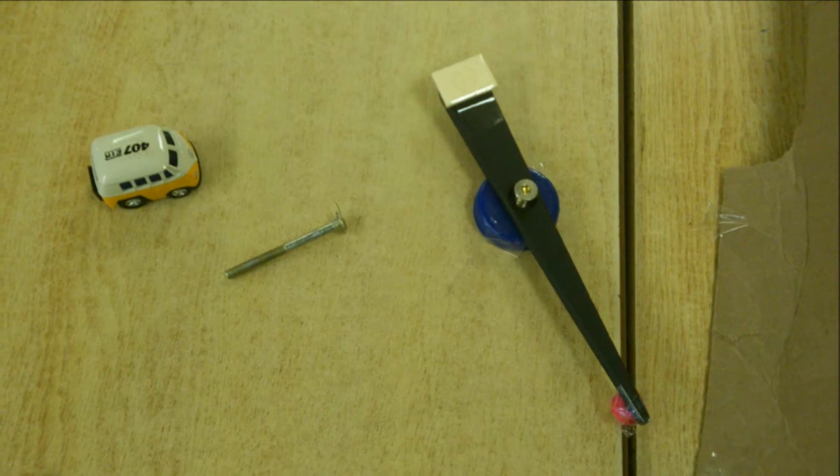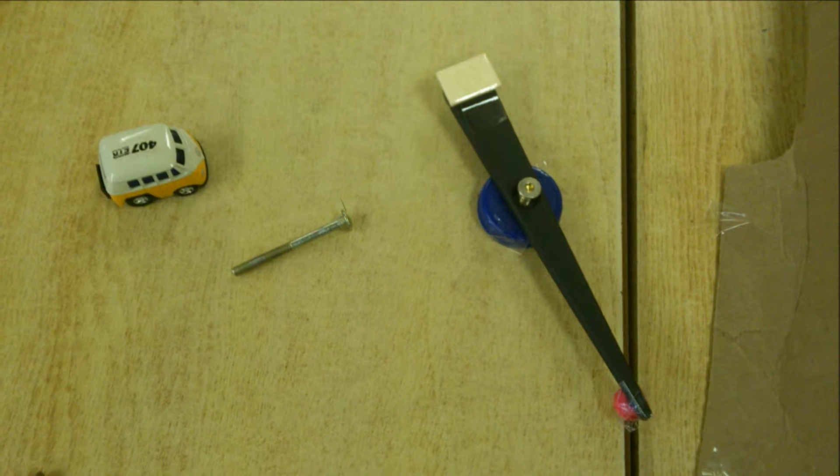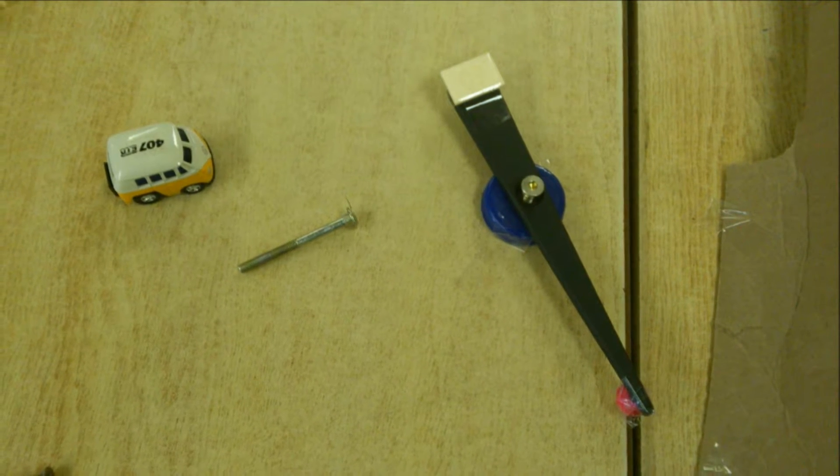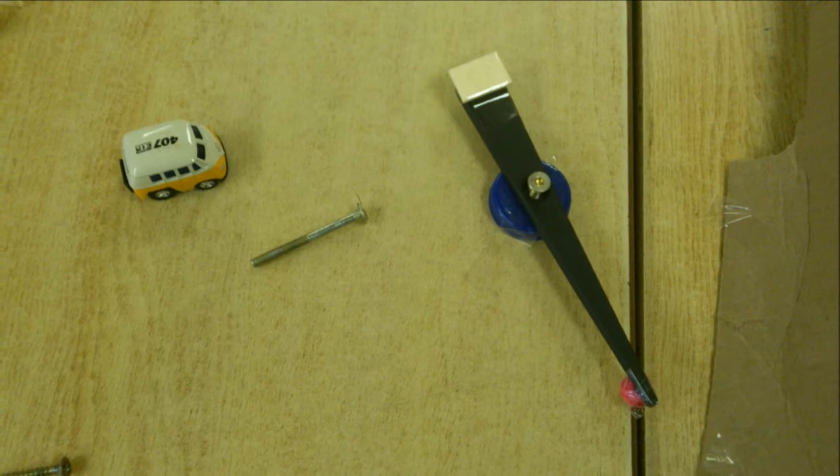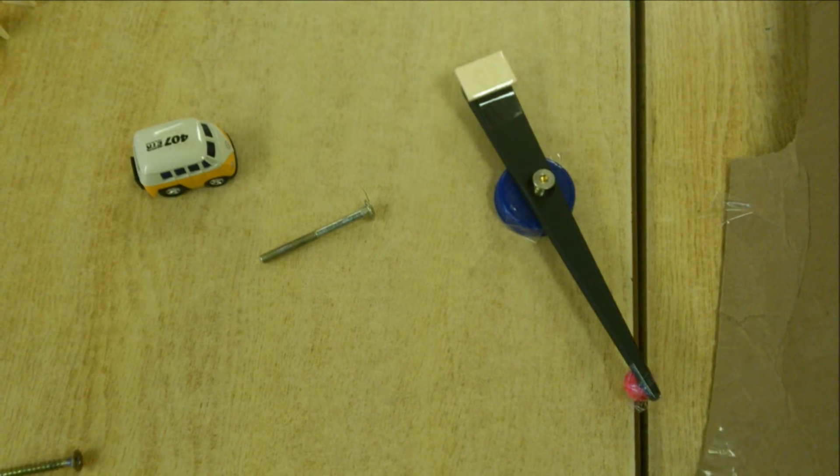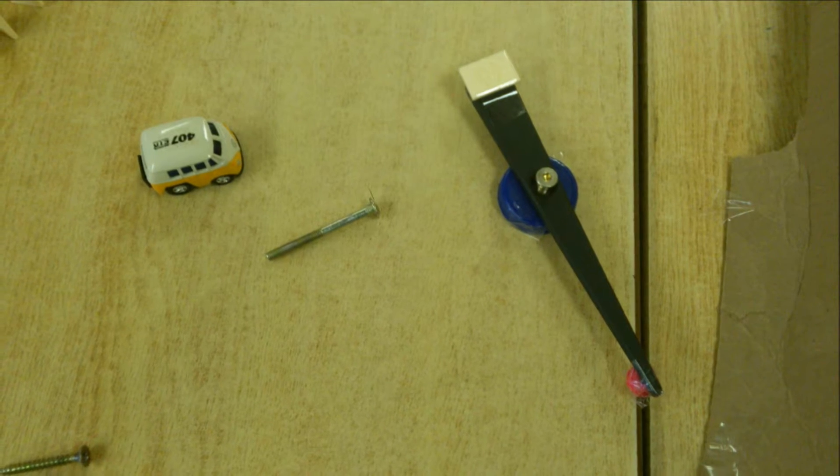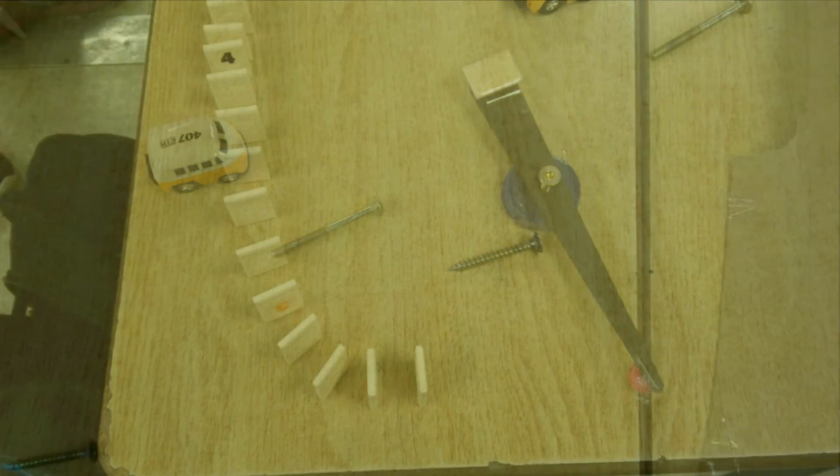The toy car will travel forward once it is released and will hit the twister, transferring the kinetic energy. Next, the twister will rotate in a circle and hit a large nail and the kinetic energy will be transferred again.